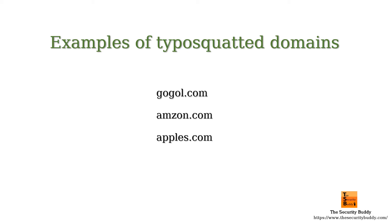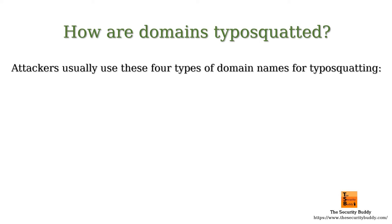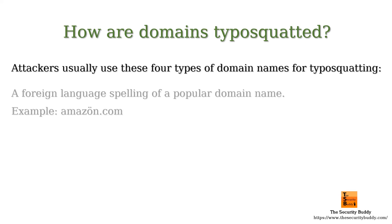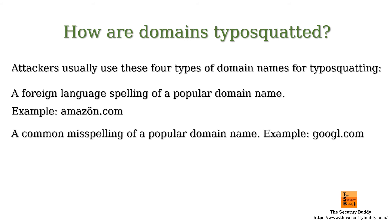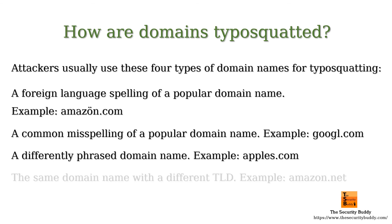How is a domain typosquatted? Attackers usually use these four types of domain names for typosquatting: a foreign language spelling of a popular domain name, a common misspelling of a popular domain name, a differently phrased domain name, and the same domain name with a different TLD.